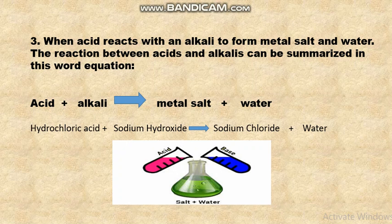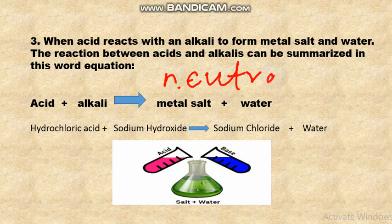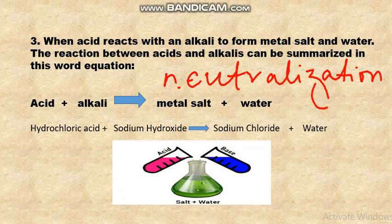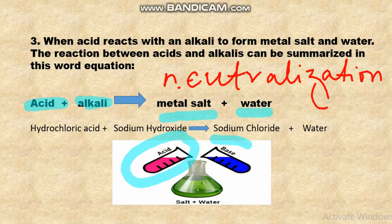The third property is when acid reacts with an alkali to form metal salt and water. This relation is known as neutralization, which we discussed in chapter number 5. The relation between acid and alkali can be summarized as: when acid reacts with alkali, it forms salt and water. For example, hydrochloric acid reacts with sodium hydroxide, which is an alkali, and sodium chloride and water are produced.